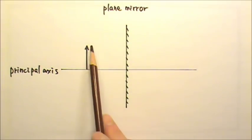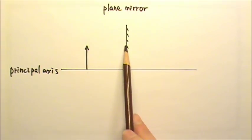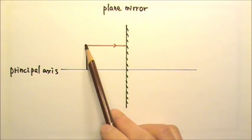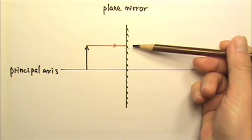For example, I can draw a ray that is parallel to the principal axis. This ray should hit the mirror and reflect straight back.